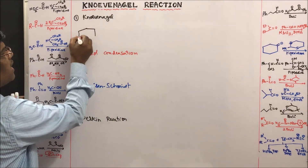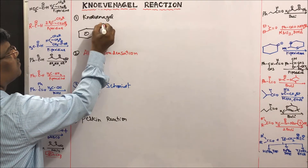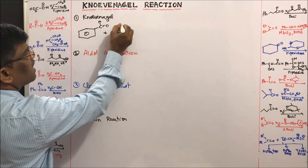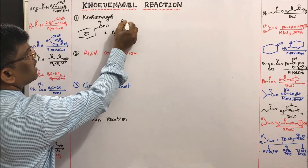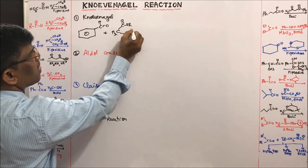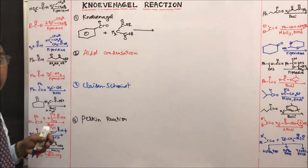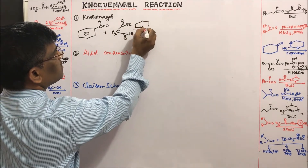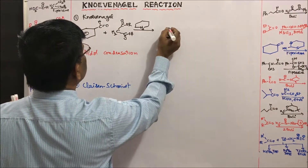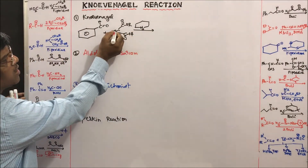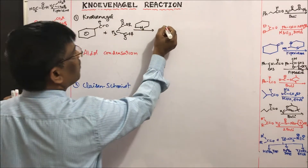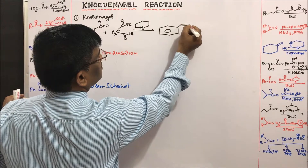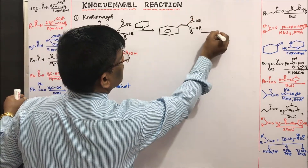For the Knoevenagel reaction, let us take benzaldehyde with malonic ester — I am taking the ester here. The catalyst is very important: I am using piperidine as the catalyst. When we do the reaction, piperidine abstracts the active methylene proton and attacks the aldehyde to give an alpha-beta unsaturated compound — this is a diester.